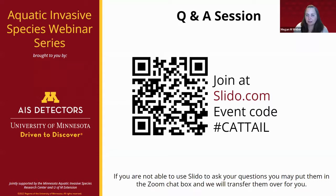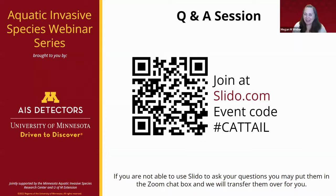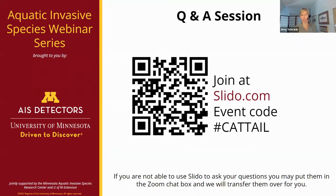Can the native cattail species also create thick stands with similar impacts on water quality and fish habitat? It really is just the hybrid cattail. Native broadleaf cattail really doesn't grow that way — it tends to be more in the upland habitat and doesn't grow out into the water as much as hybrid cattail does. Hybrid cattail grows in a big monoculture; native cattail plays nicely with other plants. Yes, regarding other AIS present at research sites — we will keep track of that in our vegetation surveys, because you could end up swapping one invasive for another.